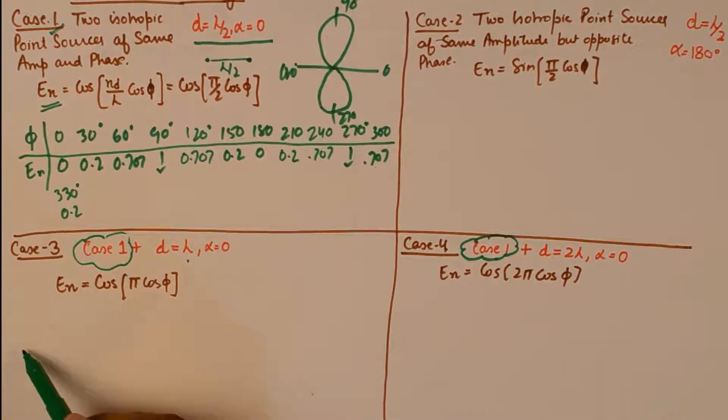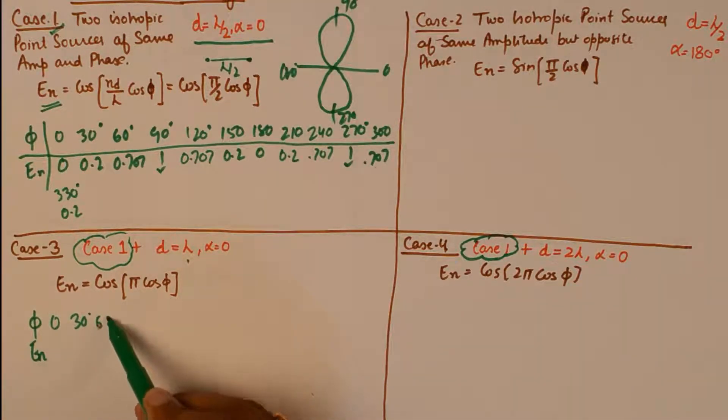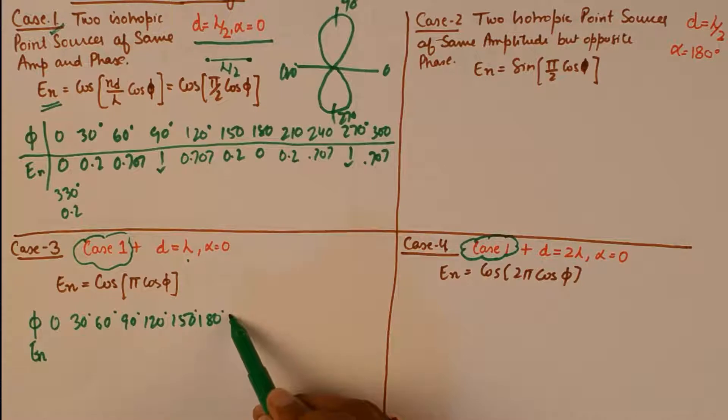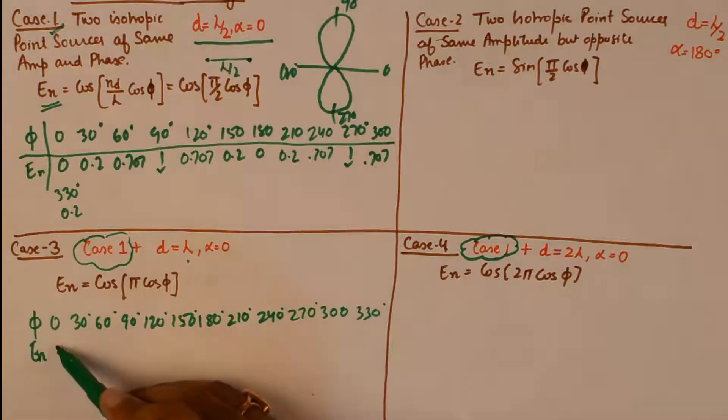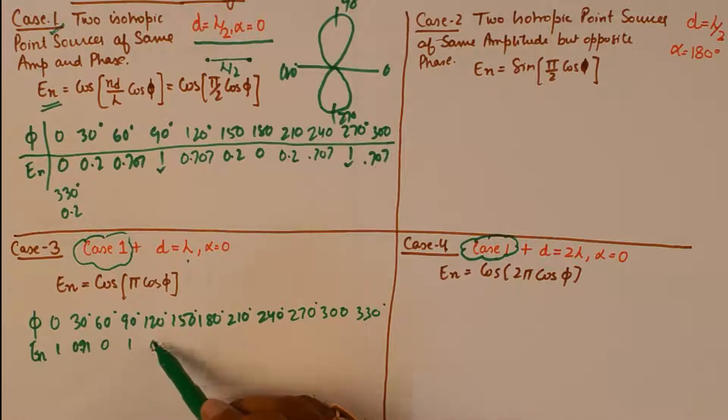Is now represented by cos of pi cos phi. And over here, cos of 2 pi cos phi. So if we now go on to make this table of the angle phi with the normalized field for 0, 30, 60, 90, 120, in fact all the angles that we have mentioned in the first case, will get a different value, will get a different set of values. And I highly recommend you to calculate these values by hand on your own, so as to get a feel of how the fields are changing with the change in the angle. But over here for quick reference purpose, I am writing down all the values.